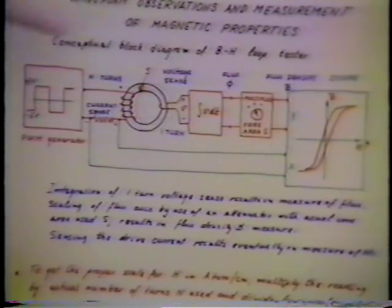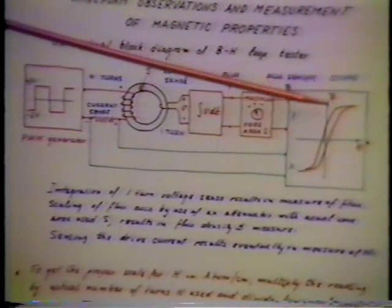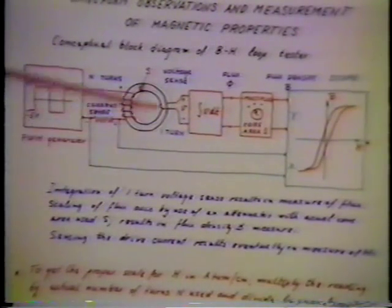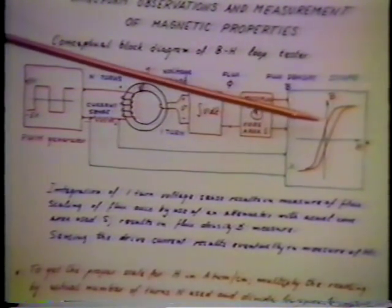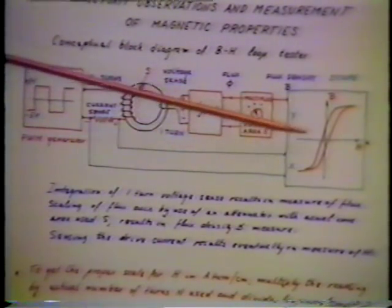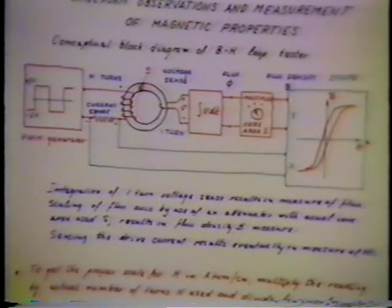In the circuit that we have here, on the vertical, we will display the flux density in Teslas and on a horizontal scale, in ampere turns per centimeter, the excitation. Let us show the setup of the BH loop tester,